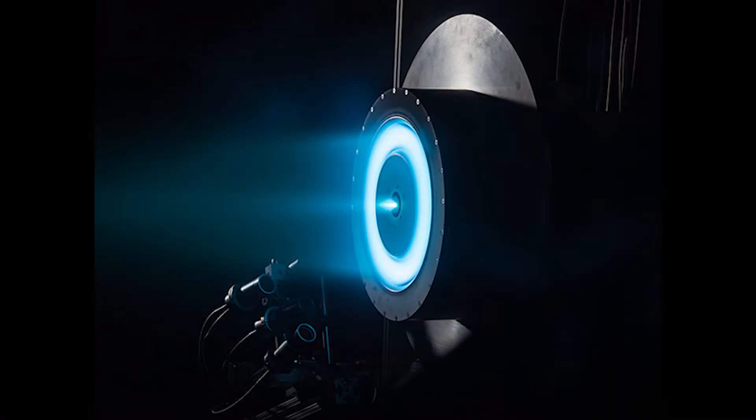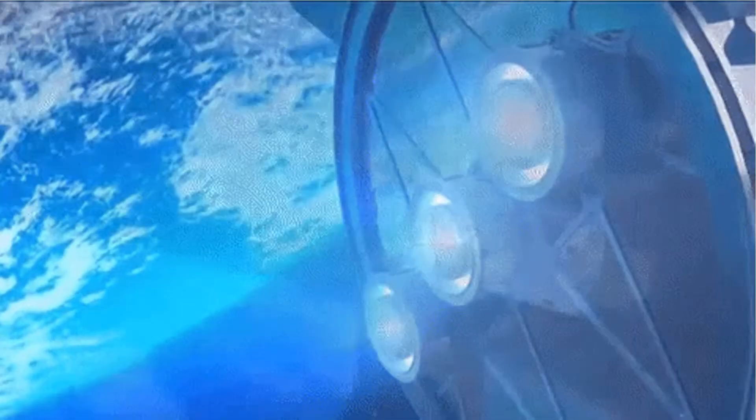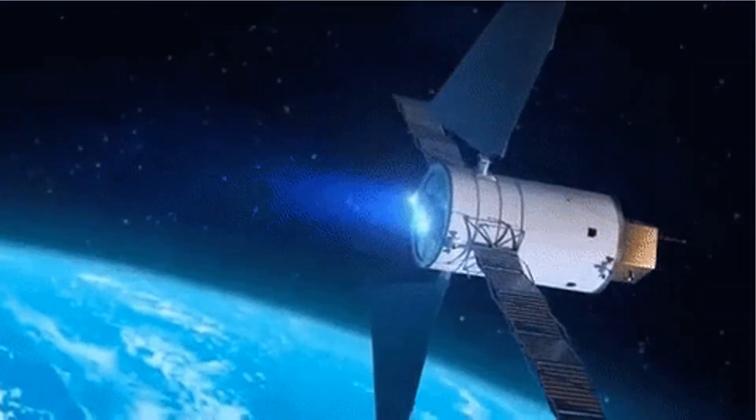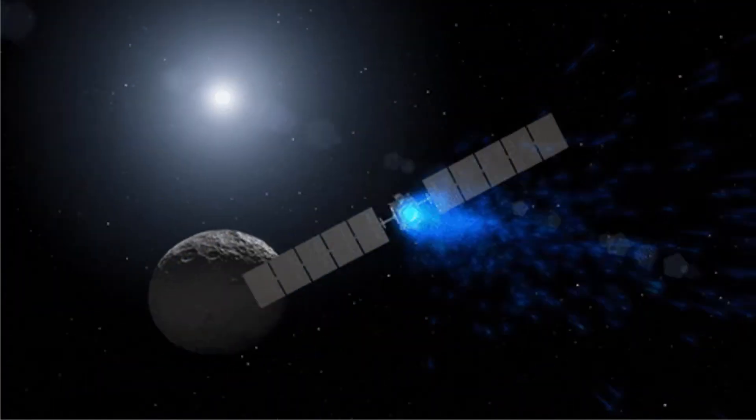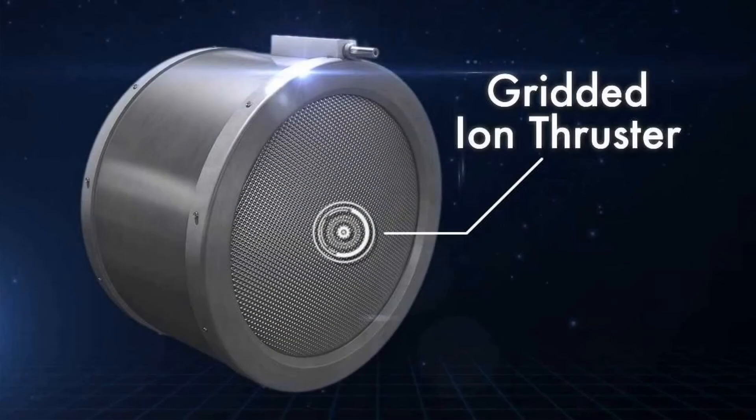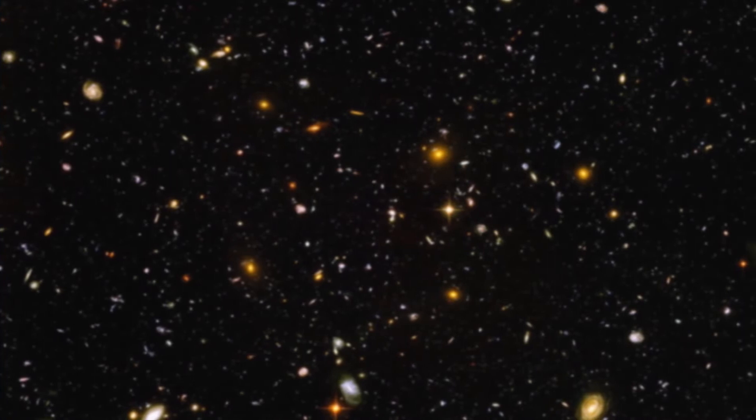Ion thrusters. They may sound like science fiction, but they are very much a reality. These incredibly complex machines can propel spacecraft across the solar system using only electricity. But how does the gridded ion thruster work? Well, you're about to find out in five easy steps.